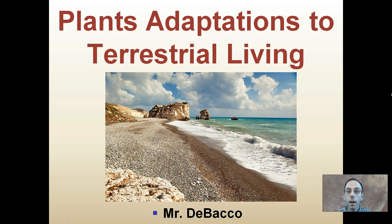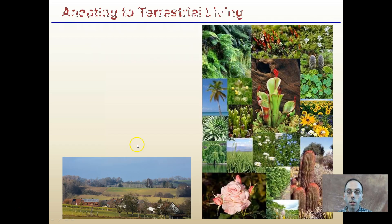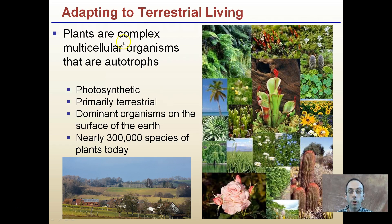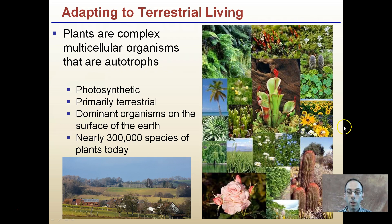This video lecture is going to look at plants' adaptations to terrestrial living. How did plants make the change from living in a mainly aquatic environment, such as the ocean, to living on land, which has a lot of challenges associated with it? Plants are complex, multicellular organisms that are autotrophs — they're photosynthetic. They're primarily terrestrial dominant organisms on the surface of Earth, and nearly 300,000 species of plants are known today, showing great diversity.